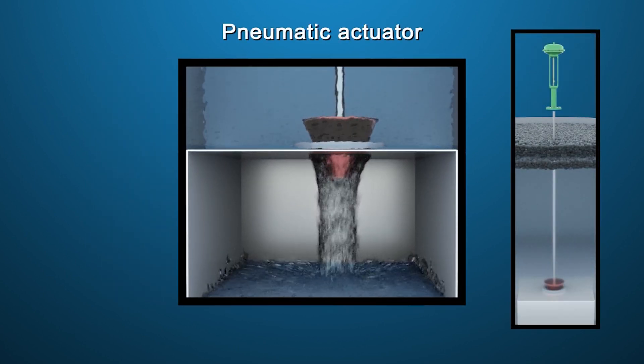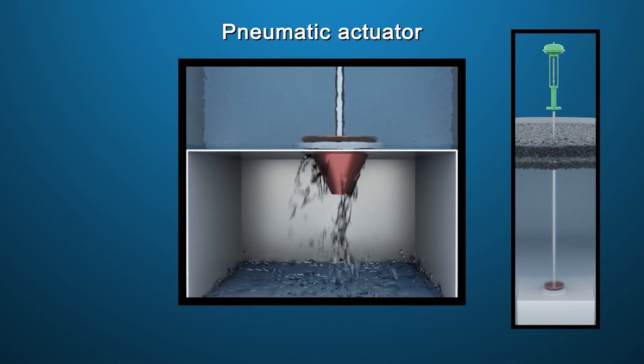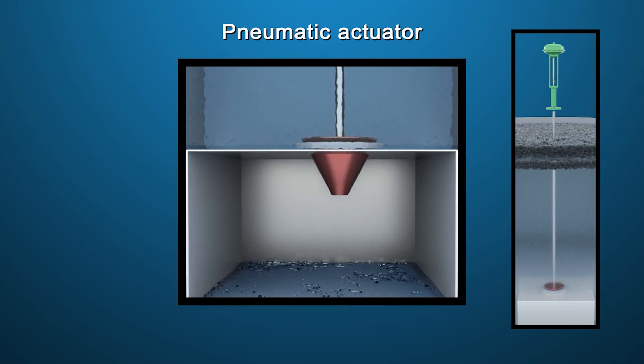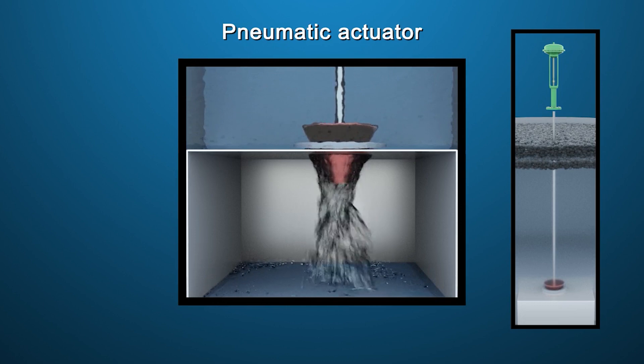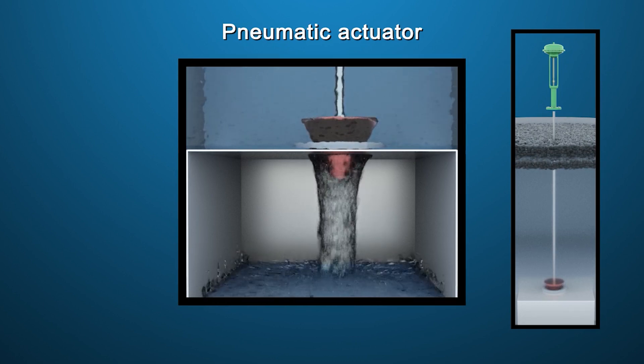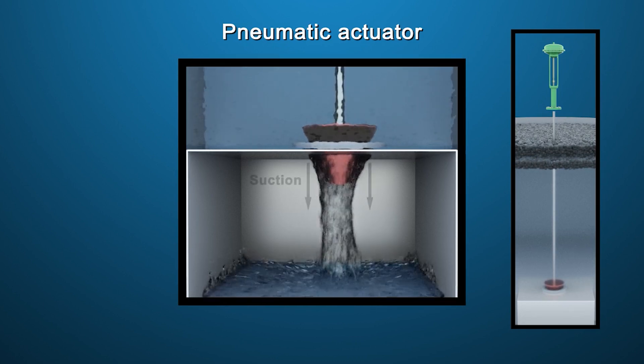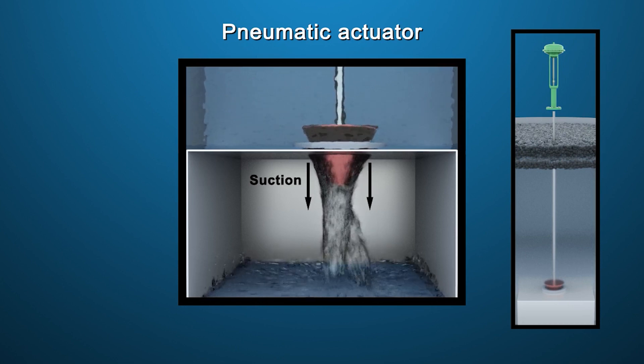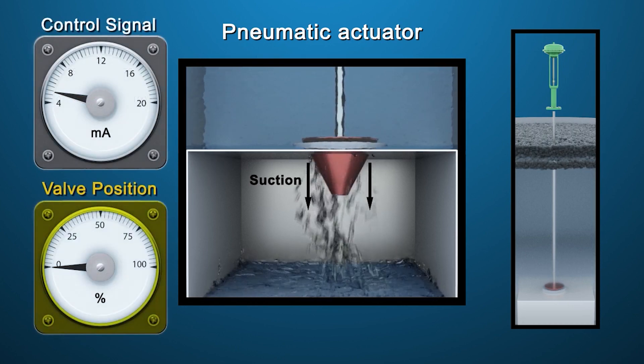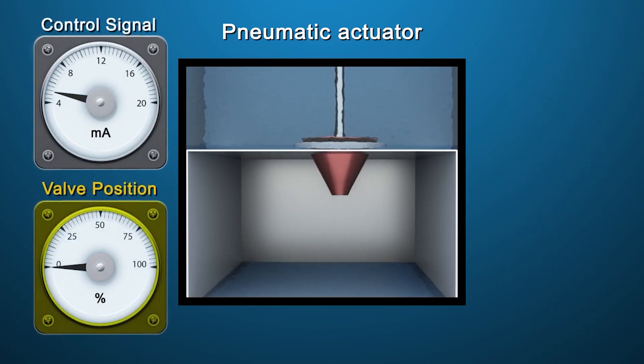Typically, dart valves are operated by pneumatic actuators. Maintaining pulp level requires small, stable set point changes. Flow exiting the dart valve creates suction, which pulls the valve closed. This is problematic for pneumatic actuators, which must overcome air compression and static friction before valve motion can occur.